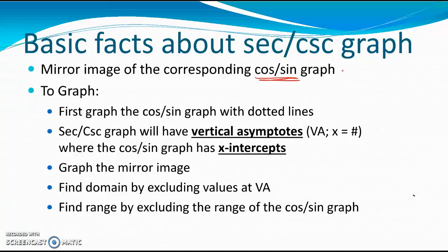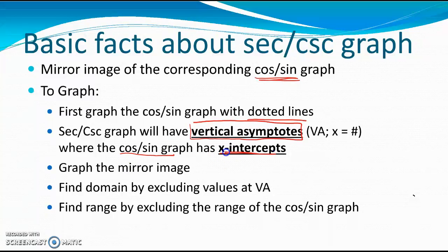You're going to do all of those same things, but when you graph those graphs, you want to graph them with a dotted line. The two new features we will be graphing: first, we are going to graph a vertical asymptote. The vertical asymptote will be located anywhere that the sine or cosine graph has an x-intercept, because where the sine function equals zero, its reciprocal — cosecant — is going to be undefined. Anywhere that the sine or cosine graph has a zero value, the secant or cosecant graph will be an undefined value, and where we are undefined we will have a vertical asymptote.